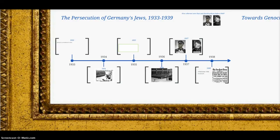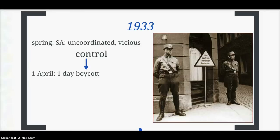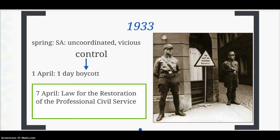A chronology of the persecution of Germany's Jews between 1933 and 1939: in 1933, after Hitler became chancellor, there was a lot of uncoordinated, vicious violence on the part of the SA. Hitler was slightly embarrassed by this — it gave the impression the SA were out of his control. So on the 1st of April, a one-day boycott of Jewish businesses was announced, with Nazi thugs preventing people from entering. On the 7th of April, the Law for the Restoration of the Professional Civil Service excluded Jewish people from serving in the civil service.